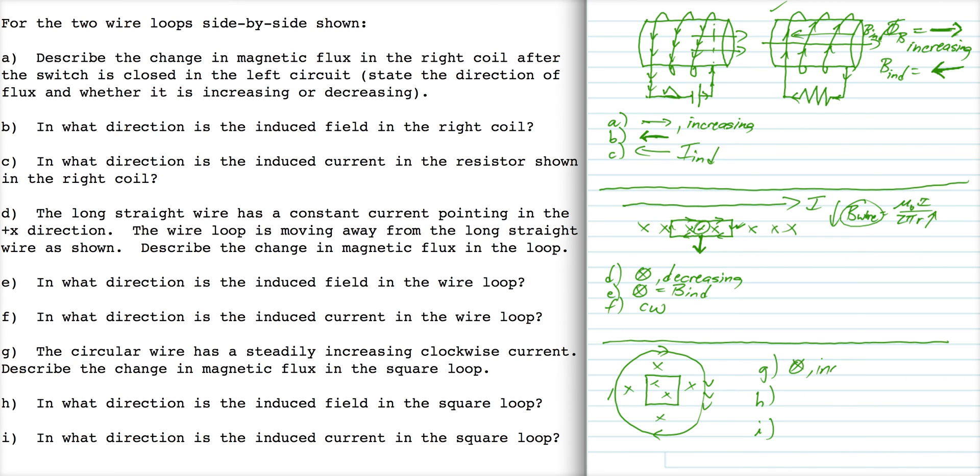The square loop is going to try to cancel that out by pointing out of the page. So the square loop is going to have an induced field that points out of the page. For an induced field to point out of the page, that requires a counterclockwise current.